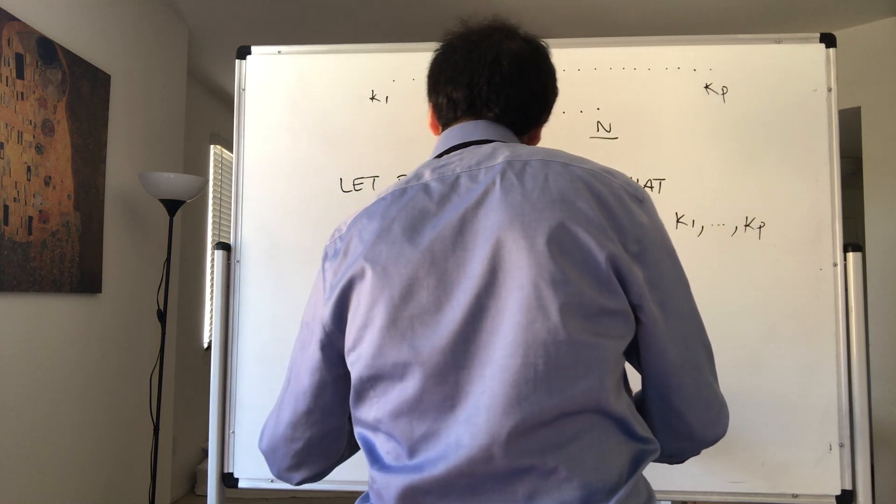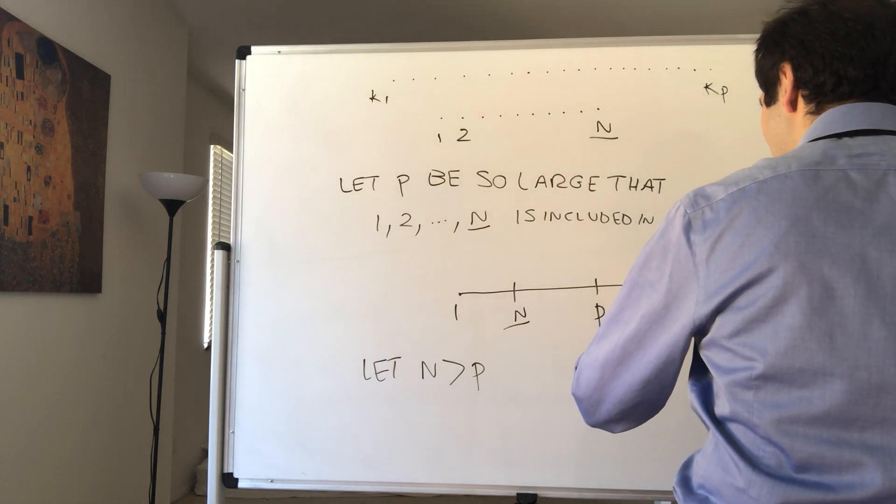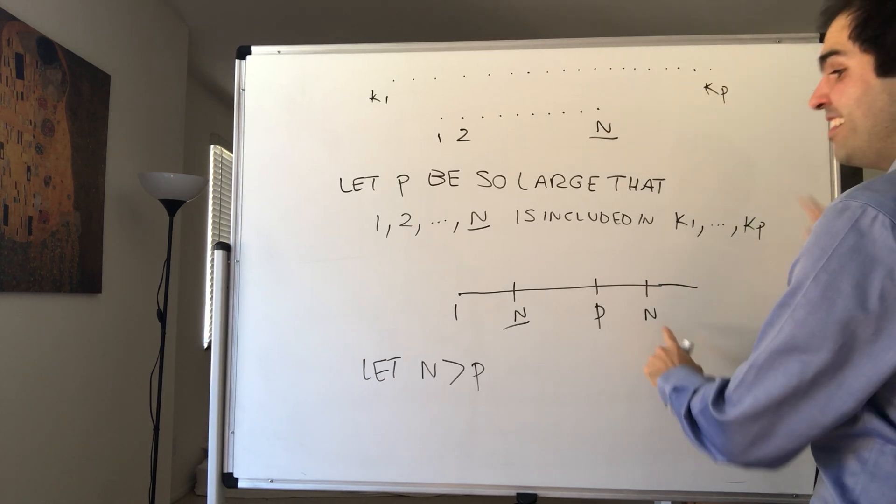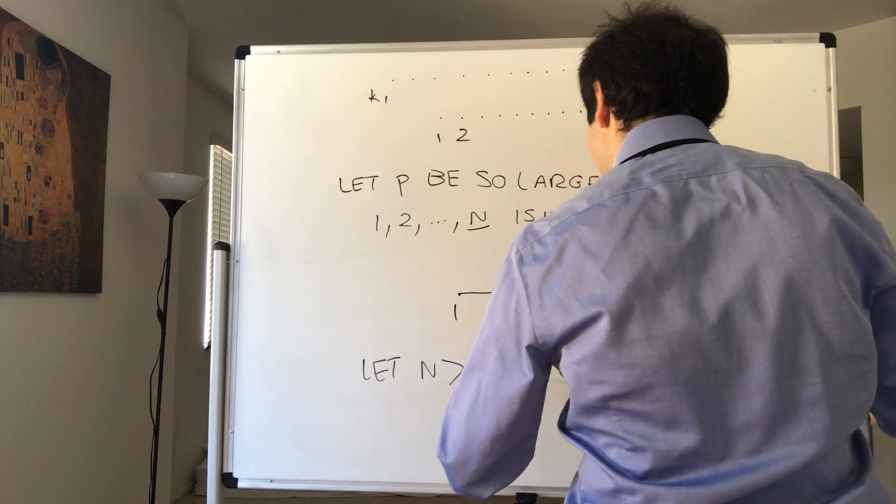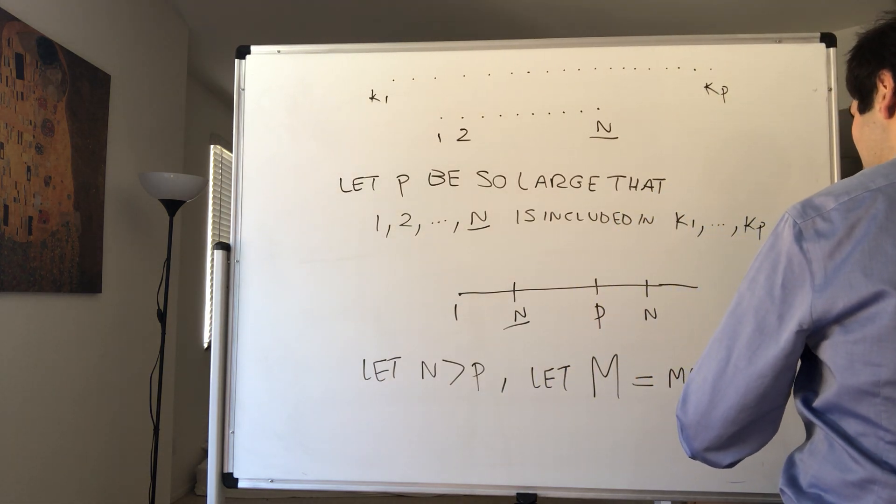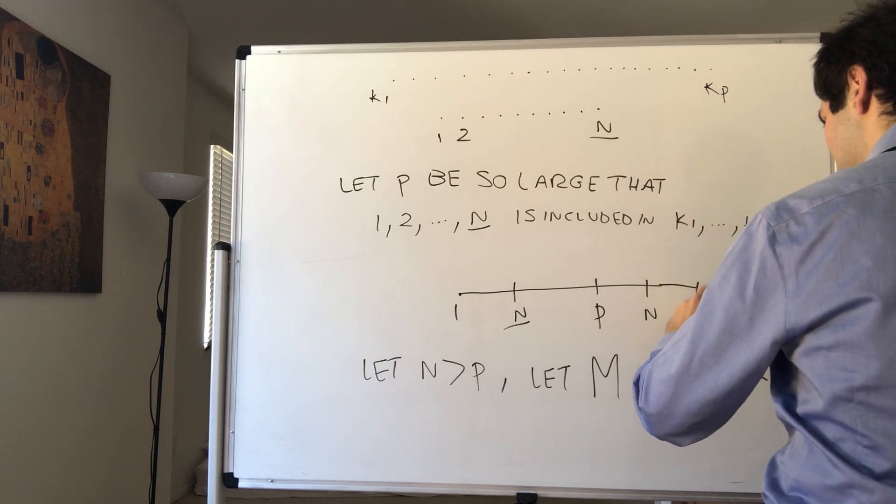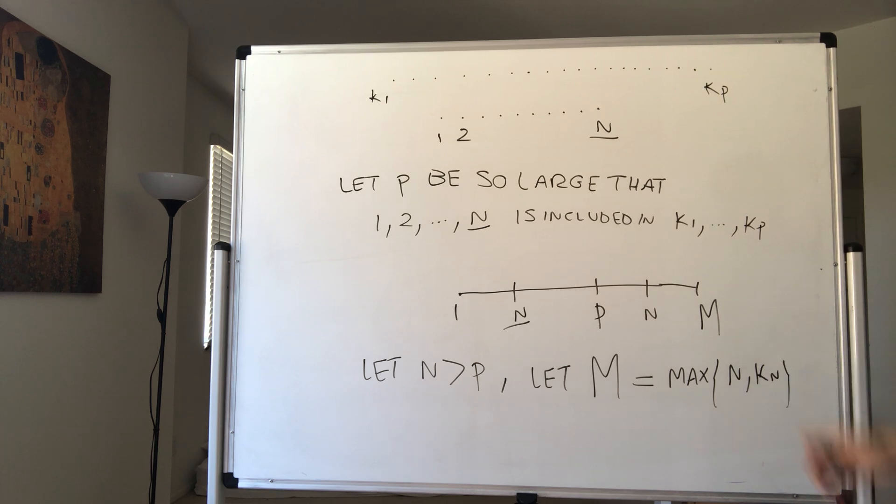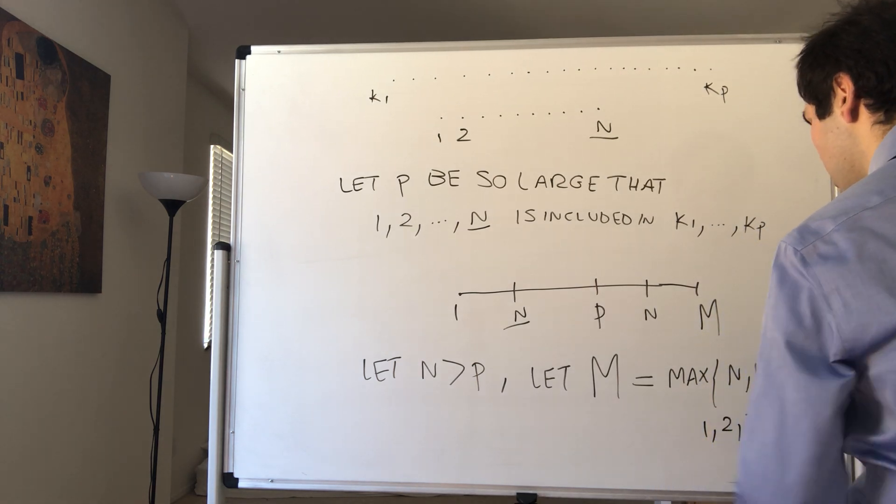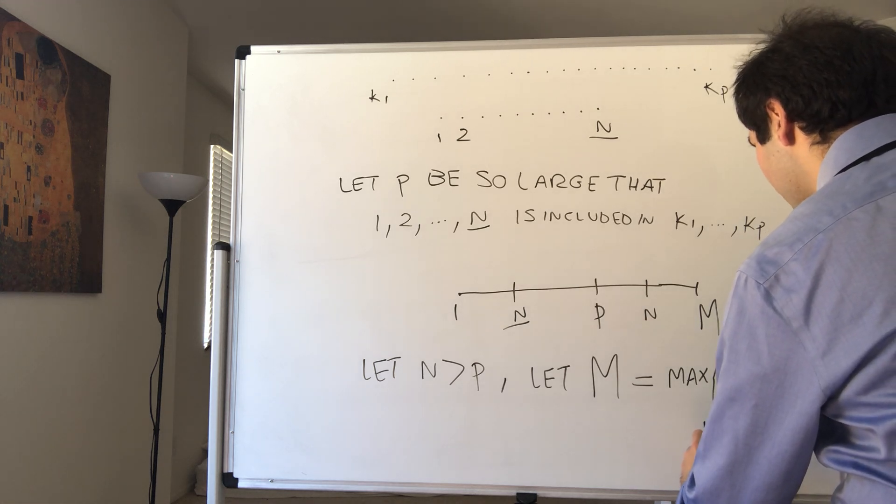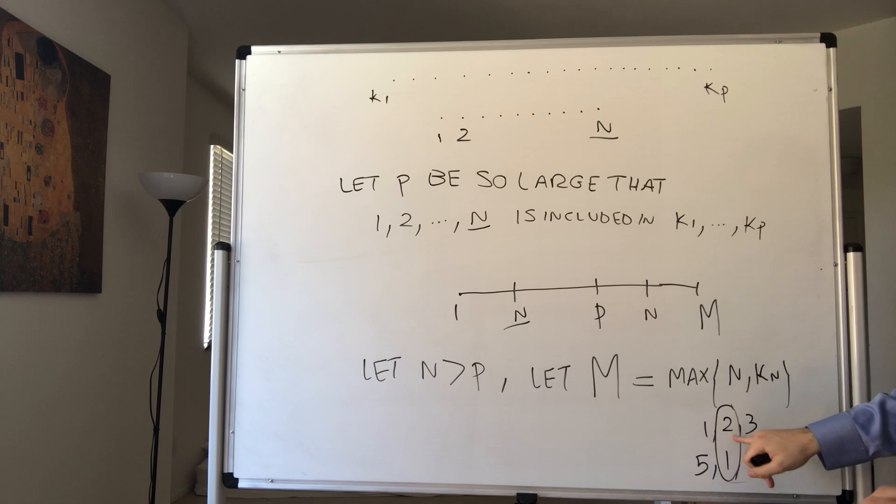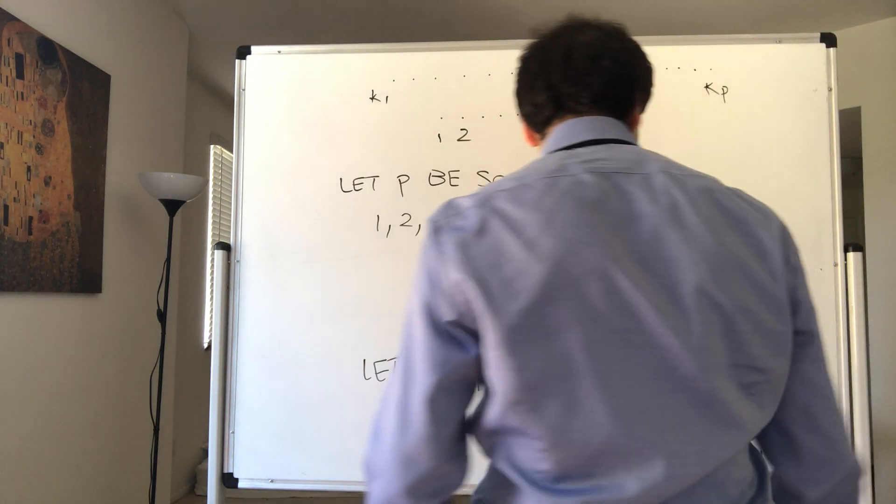Let N be even bigger than P, and let capital M be the maximum of N and K_n. And you might say, doesn't K_n have to be bigger than N? No, it doesn't. For instance, consider 1, 2, 3, but then K1 is 5, and K2 is 1, and K3 is 4. Then you see K2 is not bigger than 2. We have to be careful here.